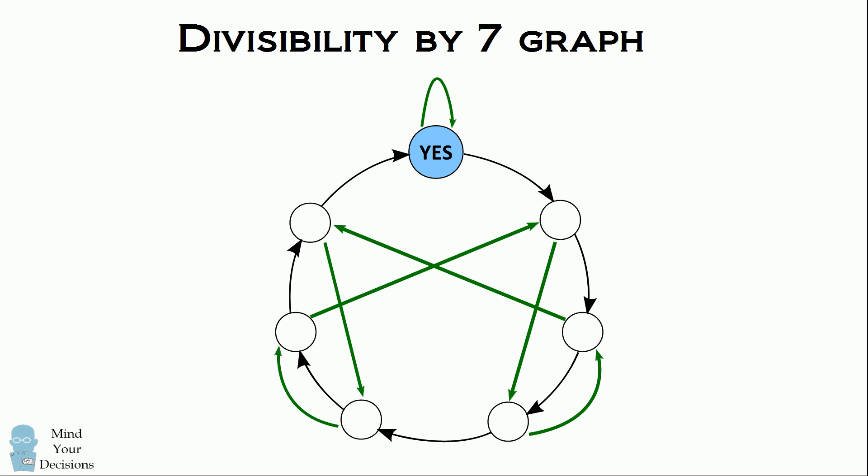Let me explain the instructions. You start out by placing your finger on the circle labeled YES. For the first and leftmost digit of the number, you move a number of black arrows equal to the value of that first digit.